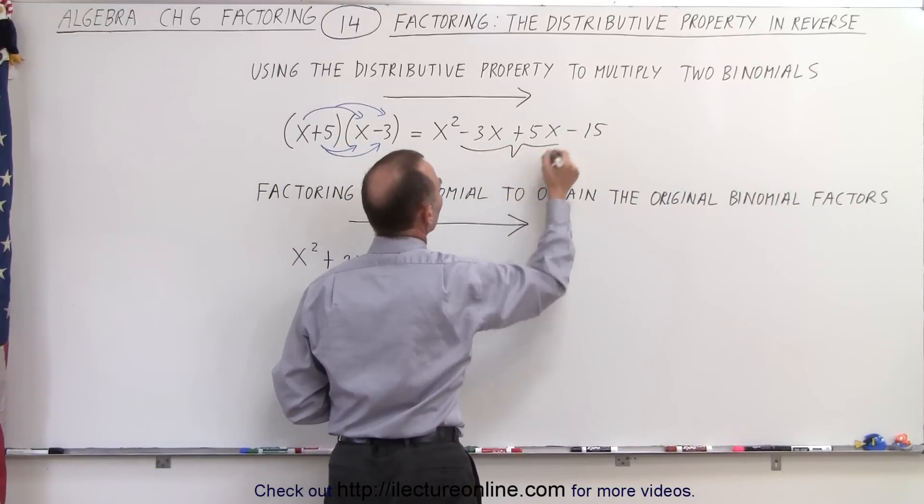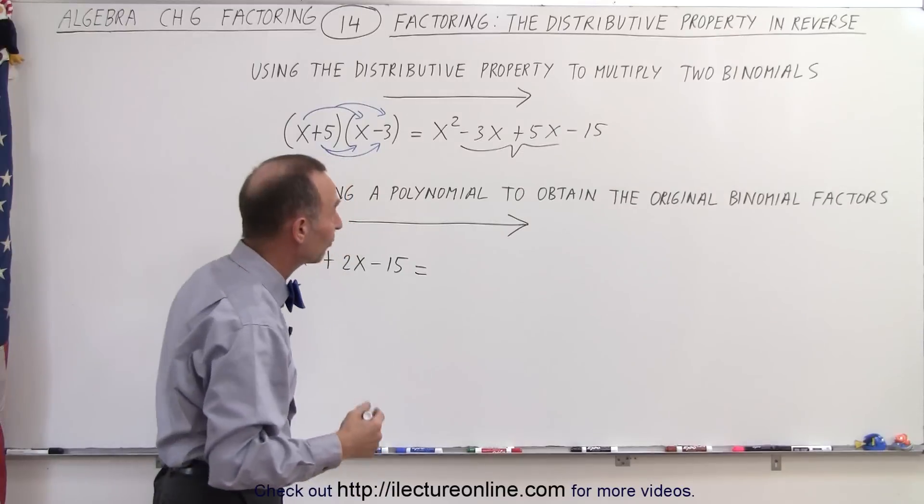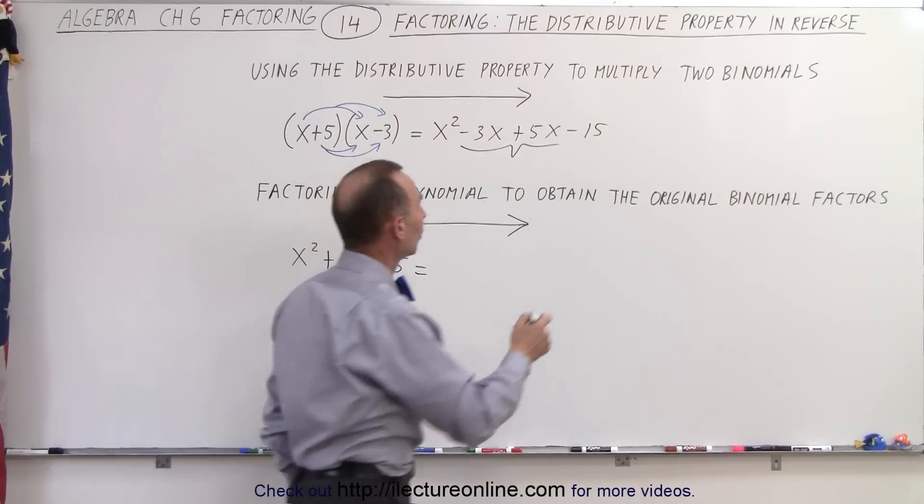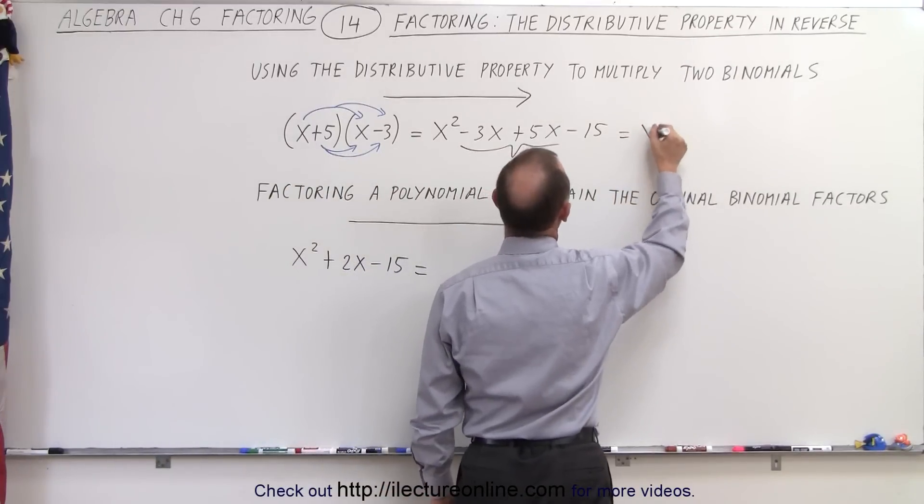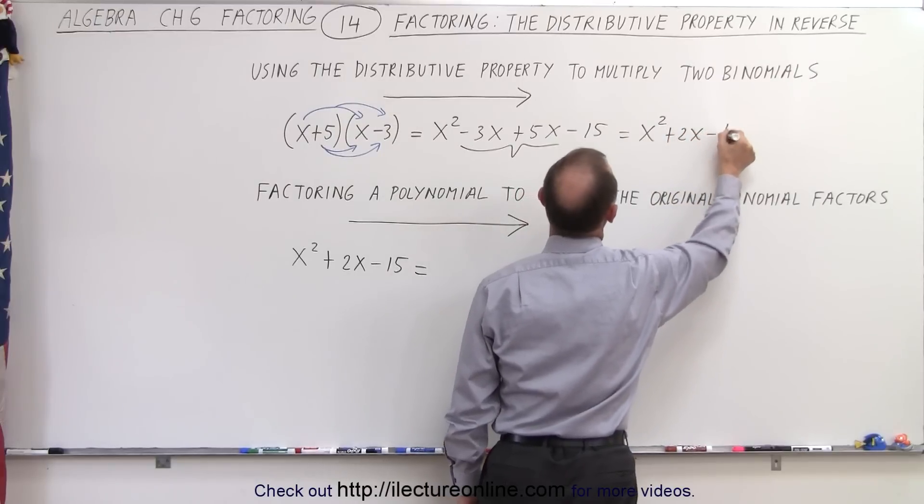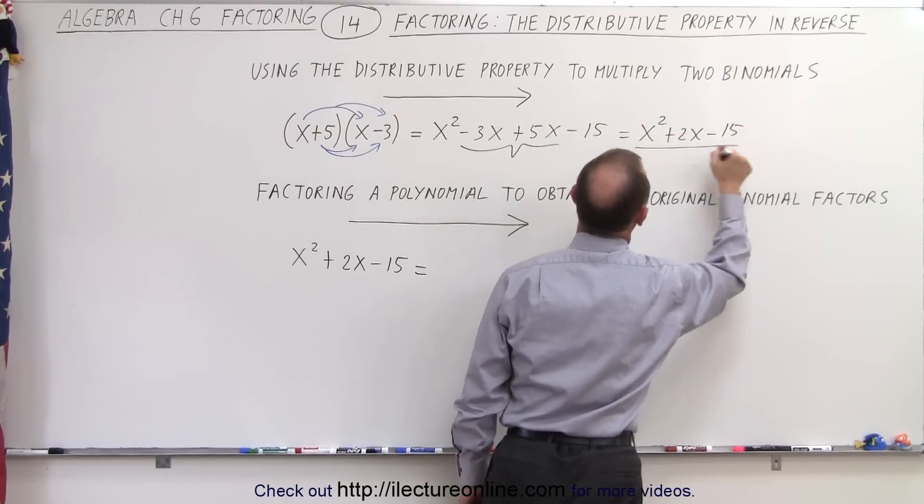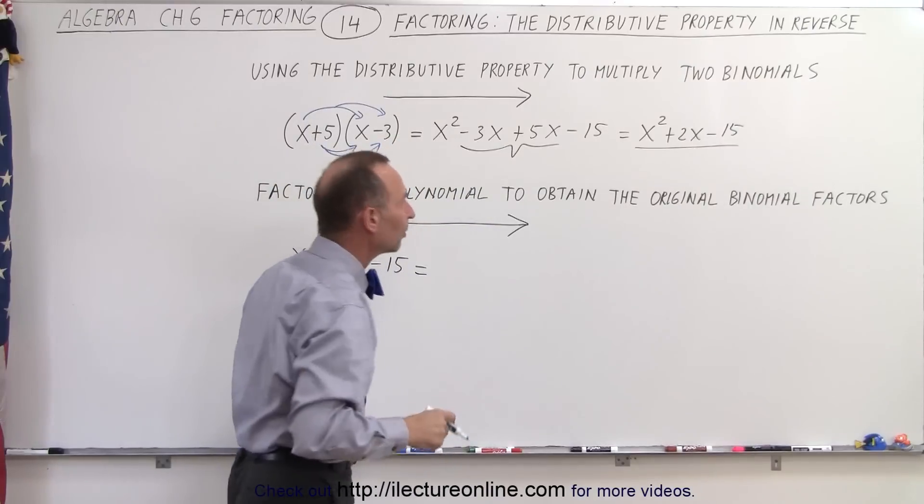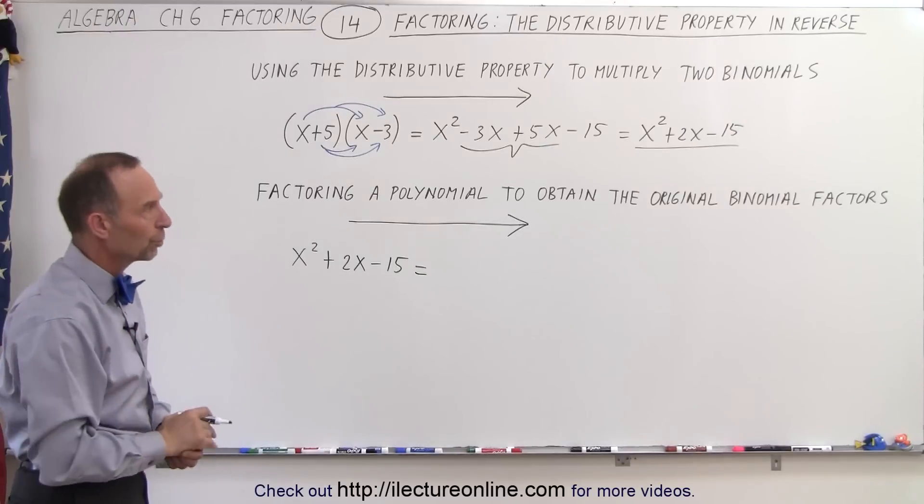Now notice we have two common terms right here. They both contain the variable x. We can combine those. So this can then be written as x squared plus 2x minus 15. And this is the result of multiplying these two binomials together. So we have a trinomial.